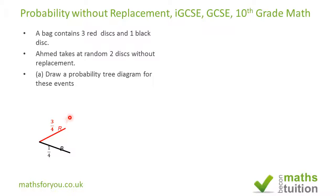If we picked a red disk first time round, the probability of picking a red disk second time round will be two over three, because we have only two red disks left and there are three disks in total. And if you picked a red disk first time round, second time round you could also pick a black disk — the probability would be one over three, since there is only one black disk and three disks left. You can check: those two add up to one.